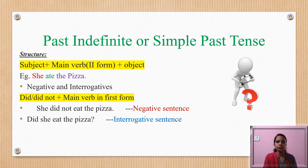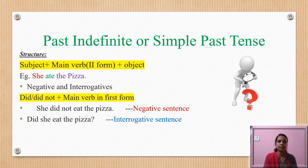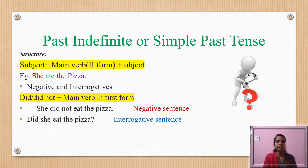While making interrogative sentences, bring the helping verb 'did' to the front of the sentence. The sentence becomes: 'Did she eat the pizza?'